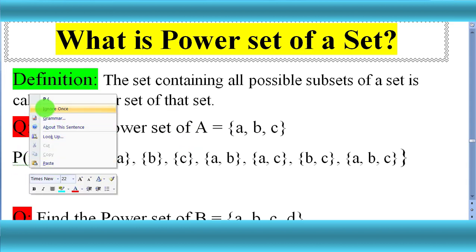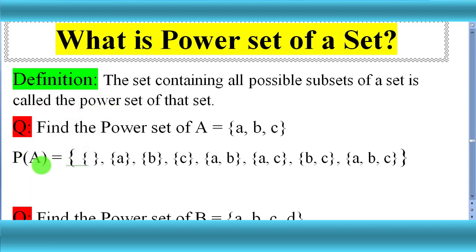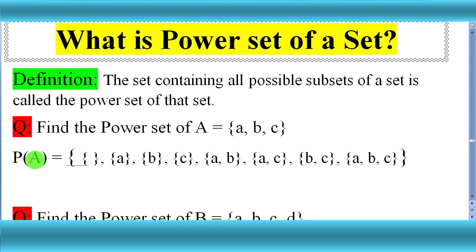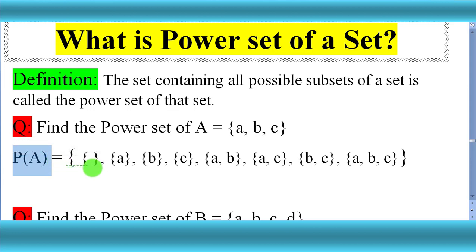First of all, we have to write the notation P, then we write brackets, and inside the brackets we write the name of the set, that is A. So it means we have the power set of A. We write: power set of A is equal to...